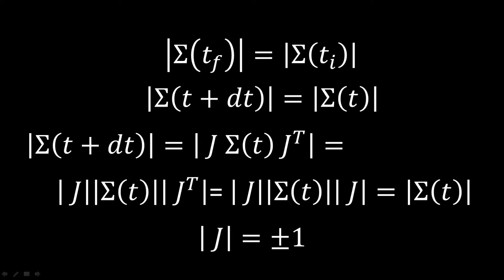For the second condition, we require that the final uncertainty equals the initial uncertainty. Assuming an infinitesimal transformation, the covariance matrix transforms by being sandwiched by the Jacobian and its transpose — this is just how it transforms. Since the determinant of a product is the product of the determinants, and the determinant of the transpose equals the determinant of the original matrix, we need the determinant of the Jacobian to equal plus or minus one.